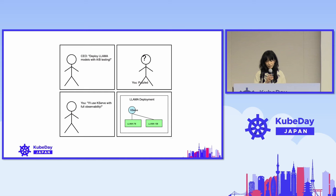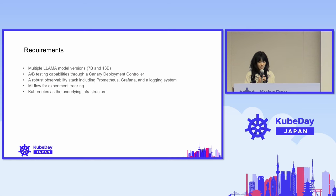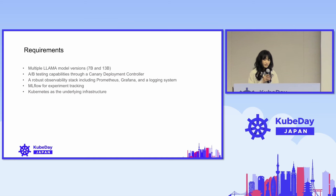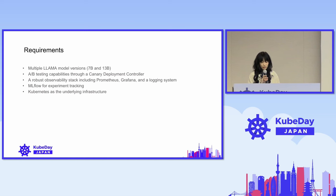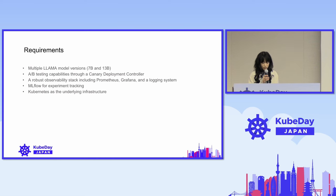On top of that, we can do some kind of observability and see which model actually performs better. So this is the requirement that we provide. The first is using different models and doing some kind of experimentation on performance, or other metrics that can be measured. We also want to put in observability to see all kinds of metrics that we can gather, and then a logging system and so on. We can also use ML for experimentation and tracking. And we use Kubernetes underneath those specs.